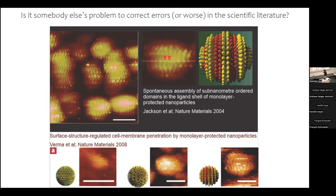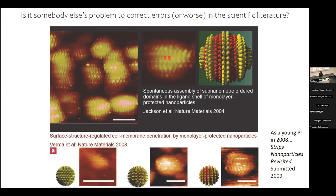Years went on and this didn't stop with this paper — there were a lot of other papers. One in 2008 claimed that because of this structure, these particles have the special ability to penetrate cells and get to the cytosol, diffusing everywhere inside the cell. At that point I was even more interested. I had moved to a biology lab and was starting my own research group. So I submitted a paper in 2009 called 'Stripey Nanoparticles Revisited,' re-analyzing these pictures and doing experiments on particle entry into cells.